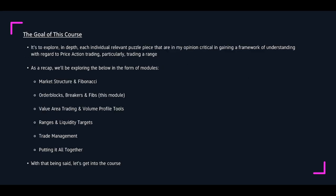What's the goal of this course? It's to explore in depth each individual relevant puzzle piece that are, in my opinion, critical in gaining a framework of understanding with regard to price action and particularly trading a range. As a recap, we're going to be exploring the following modules: market structure and Fibonacci, order blocks, breakers and fibs, value area trading and volume profile tools, ranges and liquidity targets, trade management, and then we'll be putting it all together. Several people have asked on my tweets when I've been posting if I'm going to be doing a module that puts it all together — please just check the pinned tweet or a previous tweet on my Telegram where I do mention that.